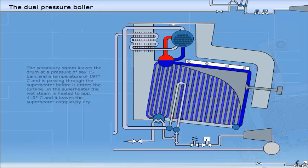The secondary steam leaves the drum at a pressure of, say, 15 bar, and a temperature of 197 degrees centigrade, and is passing through the superheater before it enters the turbine. In the superheater, the wet steam is heated to approximately 410 degrees centigrade, and it leaves the superheater completely dry.